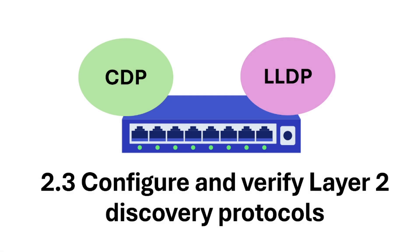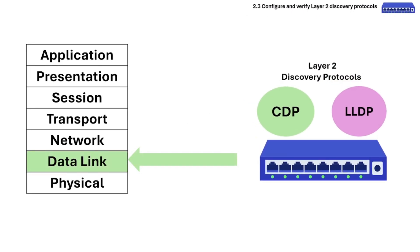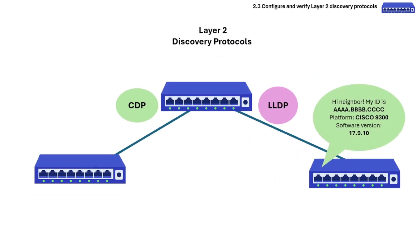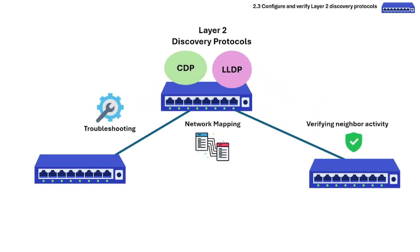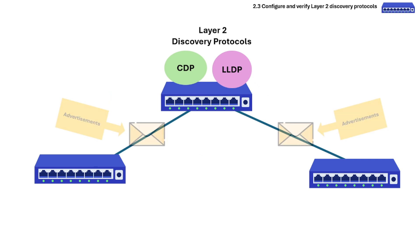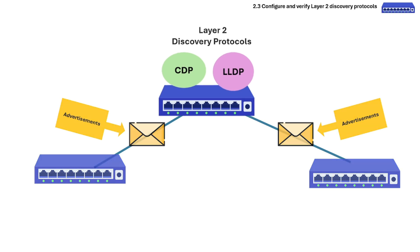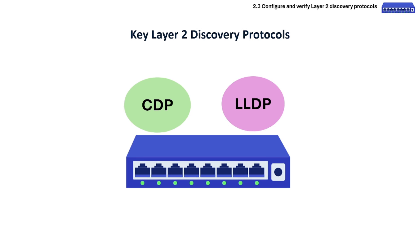Section 2.3 is about Layer 2 Discovery Protocols. Layer 2 Discovery Protocols help network devices share information about themselves. This is critical for troubleshooting, network mapping, and verifying neighbor connectivity. The mechanism for devices is to send periodic messages to discover their neighbors and store this information in a local table, which can be queried using SNMP. The key Layer 2 Discovery Protocols we will discuss are CDP and LLDP.